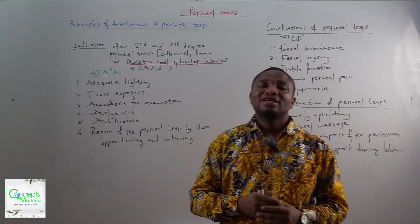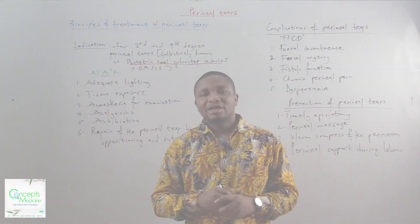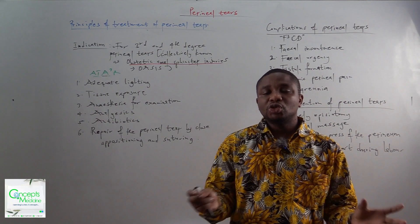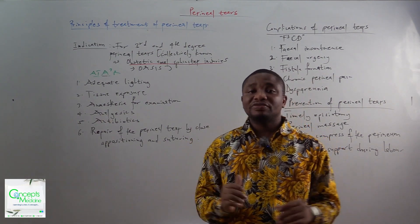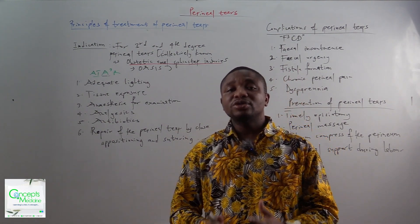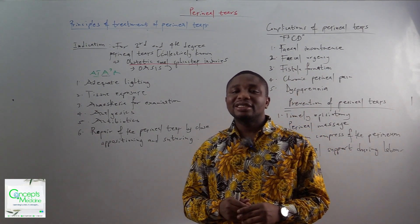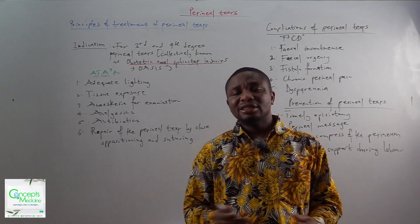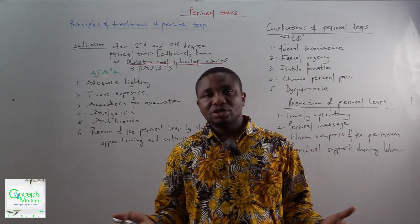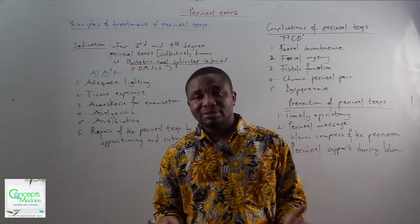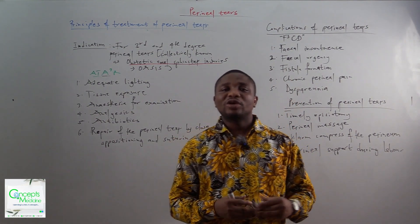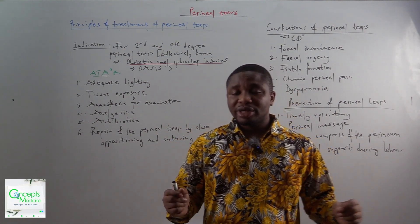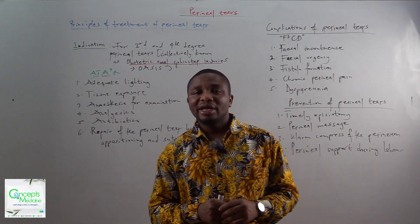For the principles of treatment of perineal tears, we can remember ATAR. The first principle is adequate lighting — before you can see where the injury is and which tissues are involved, you need adequate lighting. Then tissue exposure — the tissue should be exposed to know the extent of the injury. Then anesthesia for examination, because the patient will be in pain. Then analgesics during the repair and post-repair. Then antibiotics, because once there is a tear, microorganisms can find their way in and you want to cover for infections. Finally, repair of the perineal tear by apposition and suturing.